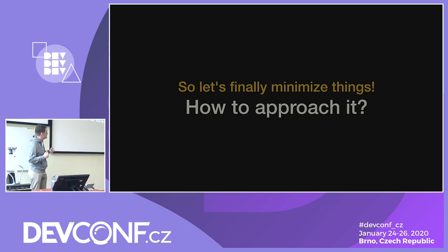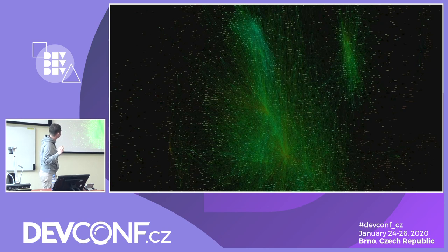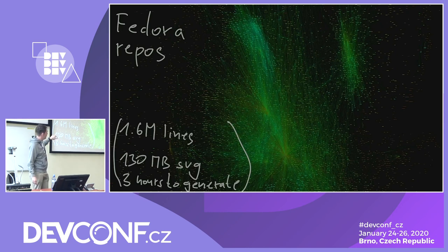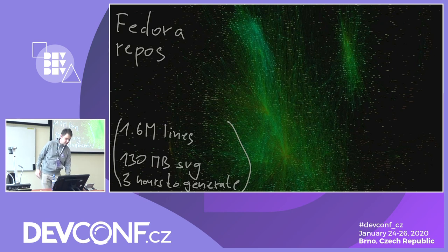So let's finally minimize things — how do we do that? Let's have a look at Fedora's repos. It's an SVG file that tries to show all packages and all dependencies everywhere. This file took three hours to generate. It's 1.6 million lines of SVG, 130 megabytes. Even for computers this is kind of hard to approach, so I realized: I'm just not minimizing this — I need a different approach.